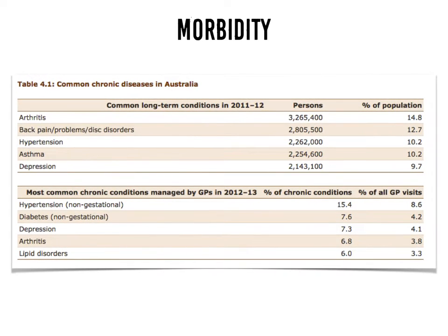This table shows the common chronic diseases in Australia, looking first at common long-term conditions — the diseases that affect the largest proportion of people in the Australian population. Arthritis, being inflammation in the joints, is the most common long-term condition, followed by back pain and disc disorders, hypertension or high blood pressure, asthma, and depression.